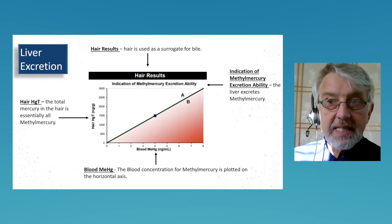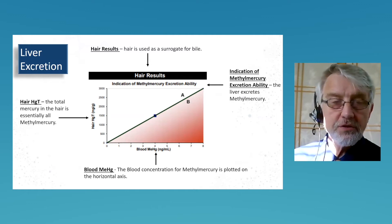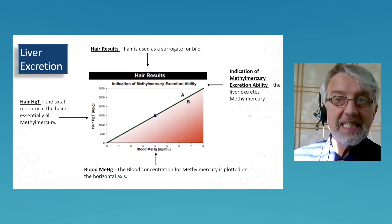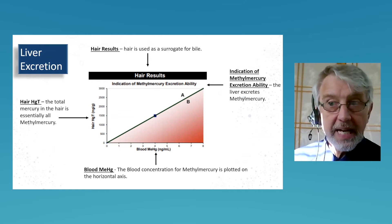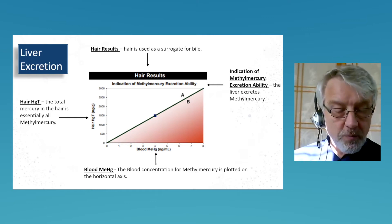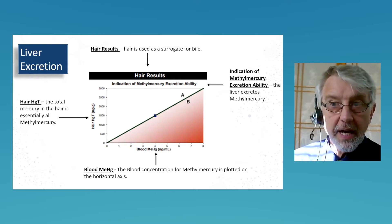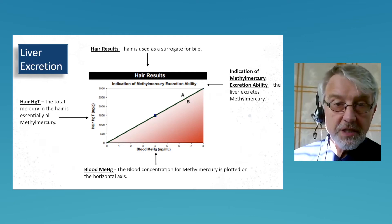Liver excretion uses the same concept. On top you see 'hair results,' which means liver. Urine is a direct excretion product of the kidneys, but bile is the excretion product of the liver — and we can't easily get a bile sample. So we use hair as a surrogate for bile, which works pretty well and we have research supporting this. A urine sample may represent two to six hours worth of excretion, whereas a hair sample could represent four to twelve weeks of excretion, so we give a little plus or minus when interpreting this graph.